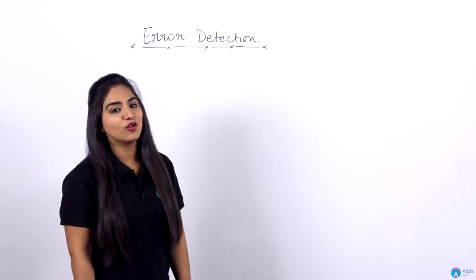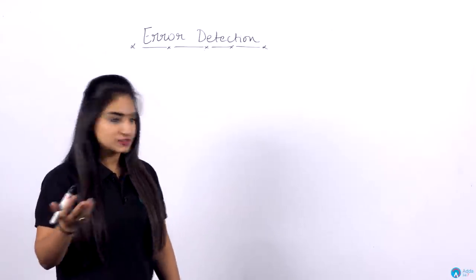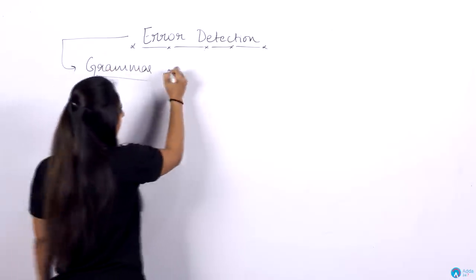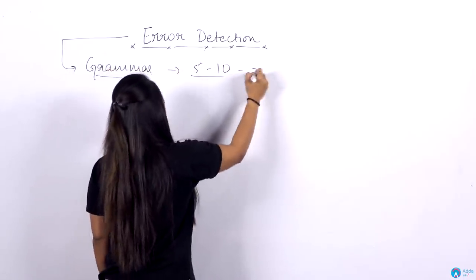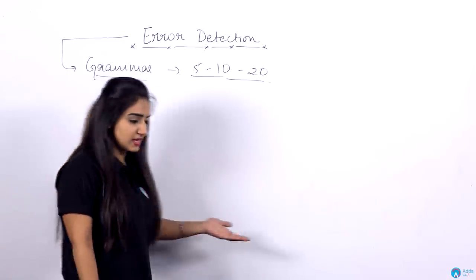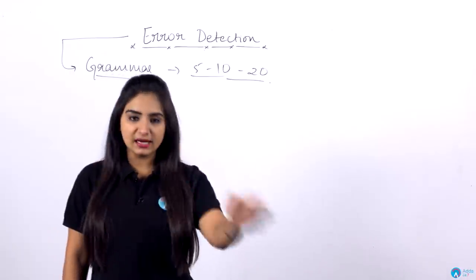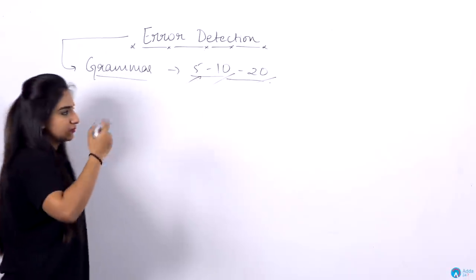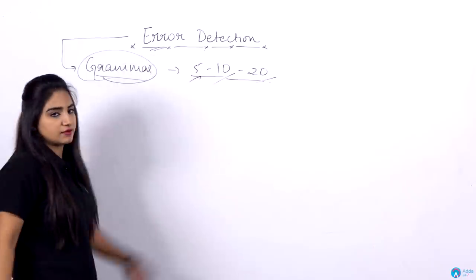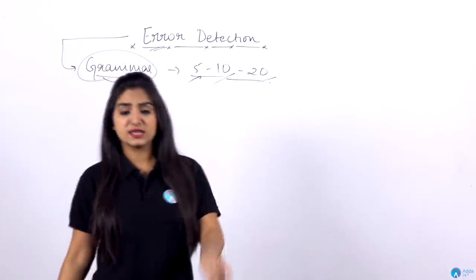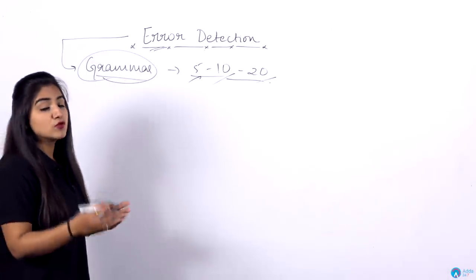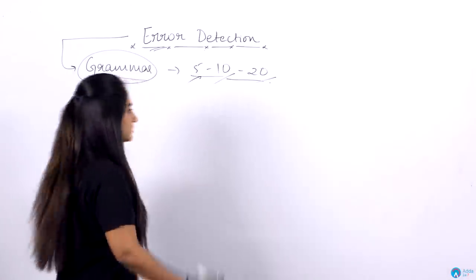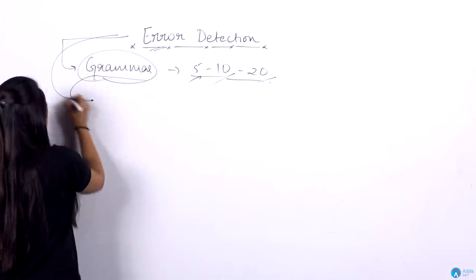Hello friends, this is Archal and I welcome you all on another session with the topic error detection. This is something very important in your examination because grammar comes for 5 to 10 marks or maybe 20 marks. In the latest IBPS examination, 20 marks were from grammar. So it could be 5, 10, or 20 marks. Obviously grammar study exercises matter a lot, and we need to practice as many questions as we can to excel in this exercise.